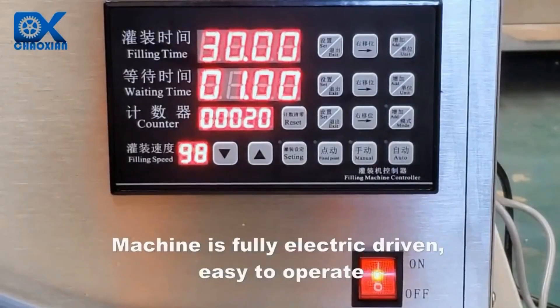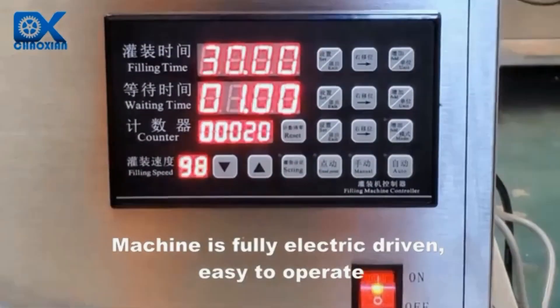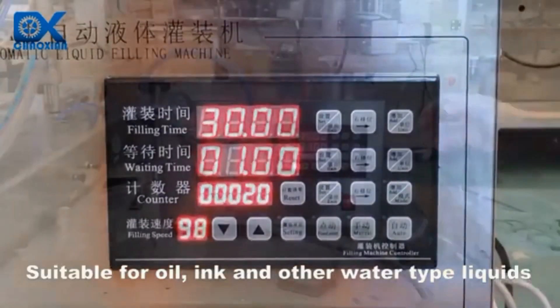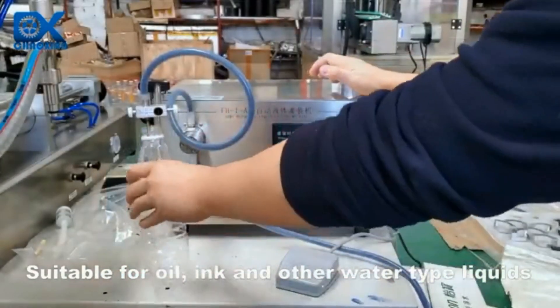Sublimation ink machine is fully electric-driven, easy to operate. Suitable for oil, ink and other water-type liquids.